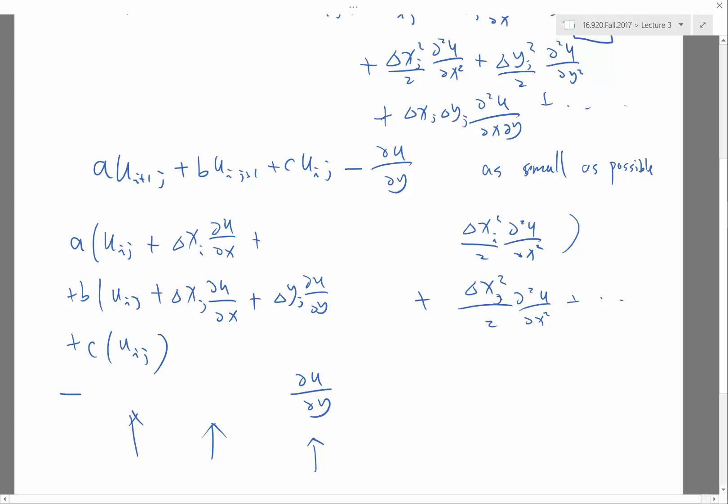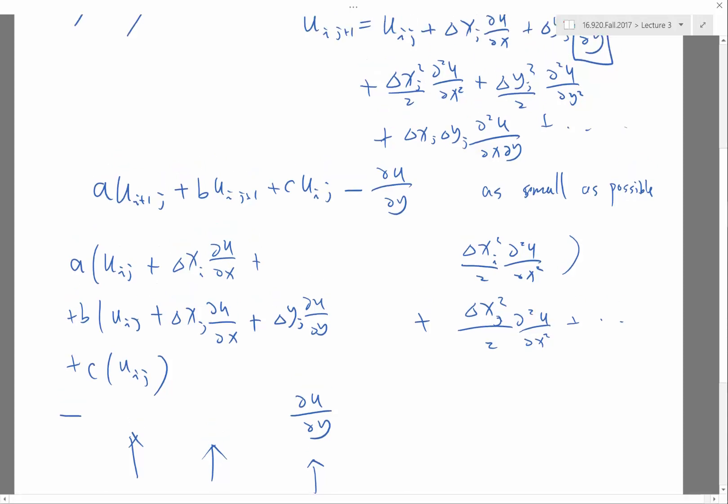If you have more points, for example if you involve U of I minus one J, U of I J minus one, then you have maybe E and F, and then with E and F you can cancel other terms, so you'll make a more accurate scheme.